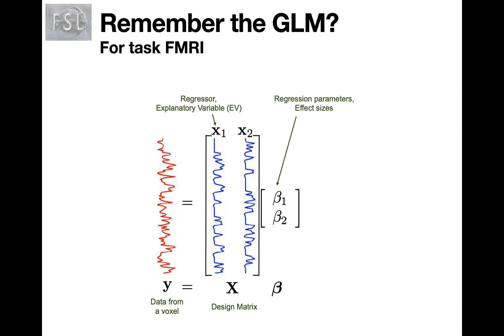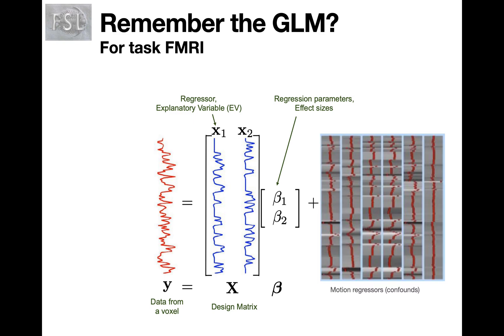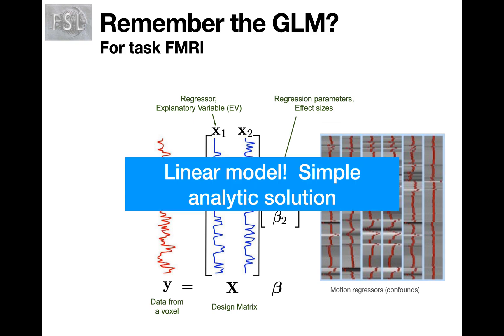Well, remember a long time ago in this course when we looked at the GLM for modeling task fMRI. We modeled our data using a design matrix which has some known regressors linked to our experiment, and then we tried to fit for these betas or regression parameters. Sometimes we included regressors, for example motion parameters estimated from the 3D data. This was a linear model with a simple analytic solution.